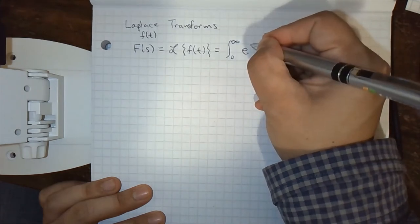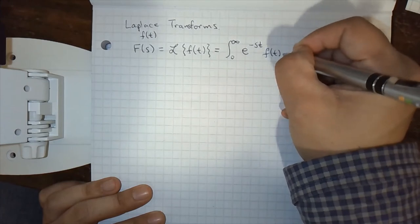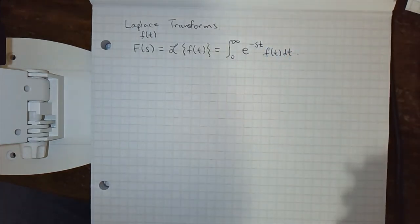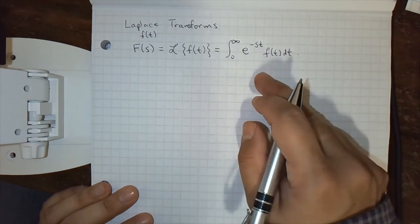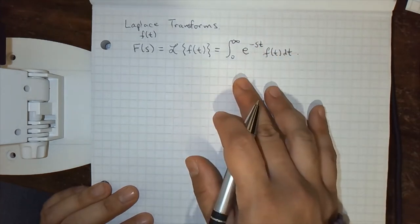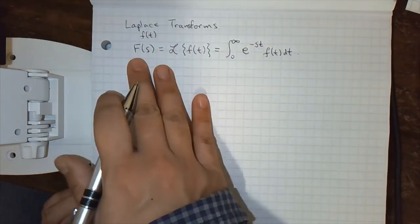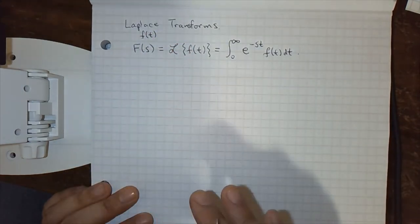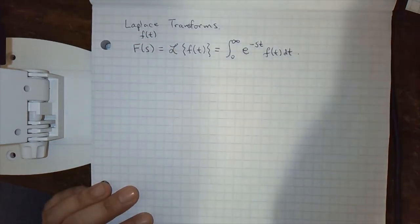e^(-st) f(t) dt. So what happens when you integrate this? The t's will go away after we put in the bounds, and this will just end up being a function of s. So we've changed the variable from t to s. It's some other function that's related to the original function, but usually looks nothing like it.